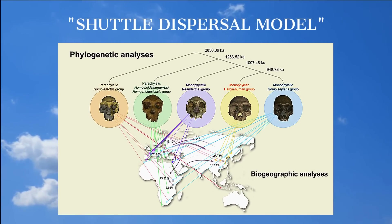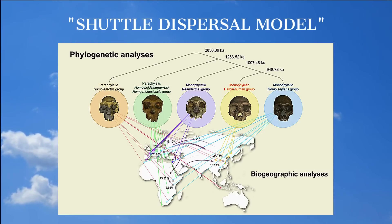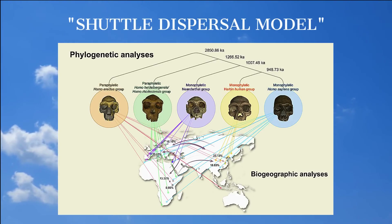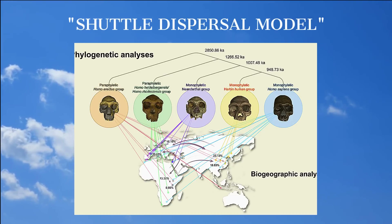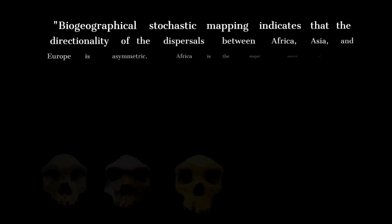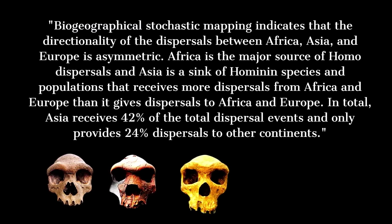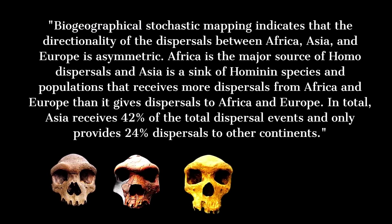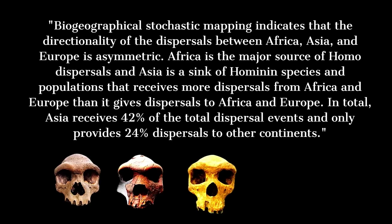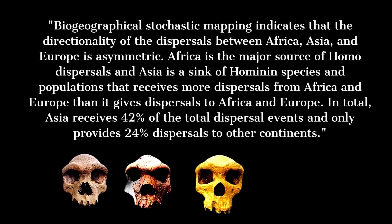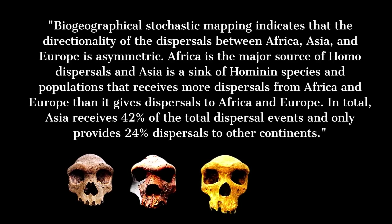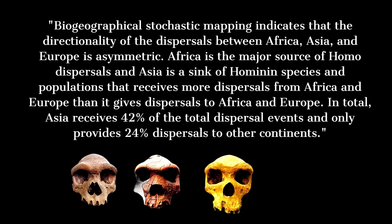Is it possible that Asian hominids migrated back to Africa? This model may seem against the one-way model of human evolution that we have been taught, but there is no logical reason to dismiss a multidirectional model of human dispersal. According to the paper, biogeographical stochastic mapping indicates that the directionality of the dispersals between Africa, Asia, and Europe is asymmetric. Africa is the major source of homo dispersals, and Asia is a sink of hominin species and populations that receives more dispersals from Africa and Europe than it gives.